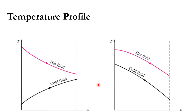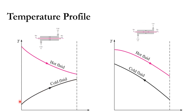Looking at the temperature profiles: in the co-current arrangement, the hot fluid temperature decreases from T1 to T2 and the cold fluid temperature increases from T3 to T4. At the inlet junction the temperature difference is very high, while at the outlet it is very low. In the counter current arrangement, the abrupt change in temperature difference (delta T) is avoided, giving a more uniform temperature profile along the exchanger.